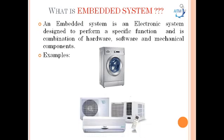Another example of an embedded system is an AC air conditioner. It is an electronic system designed to perform a specific function and is a combination of hardware, software, and mechanical components. The hardware includes a remote, display, buzzer, sensors, and electronic circuits. The software is a chip on the circuit that controls and monitors various operations, monitoring external temperature through sensors and releasing the coolant. The mechanical components include the motor and outlet of the air conditioner.